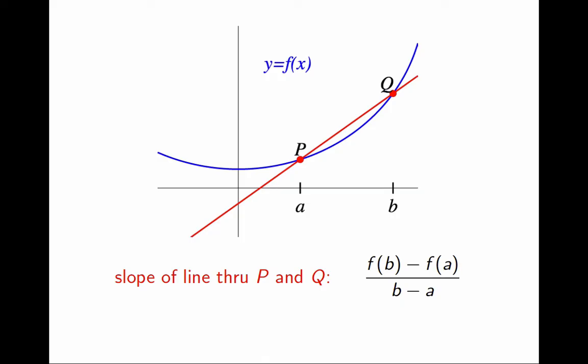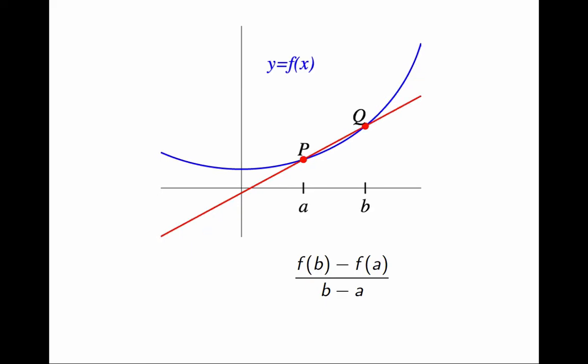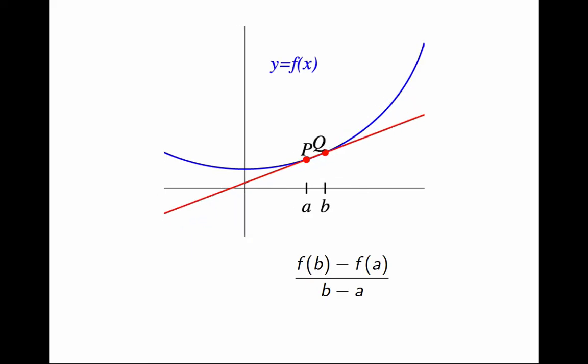Like before, let's move Q closer and closer to P. Making Q equal to P would mean making b equal to a, which makes no sense. But instead, I can take the limit as b approaches a.